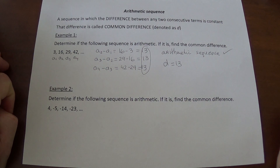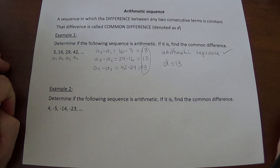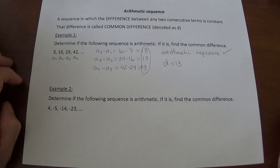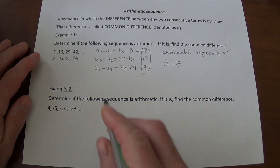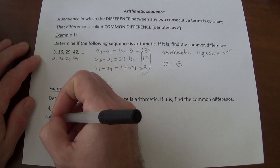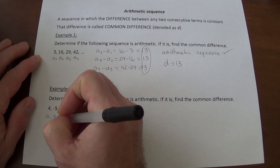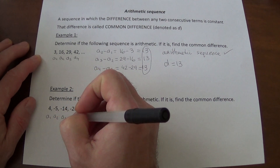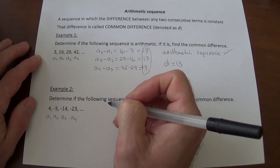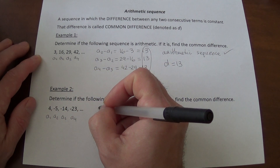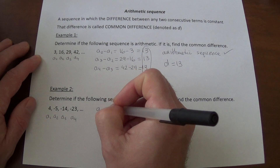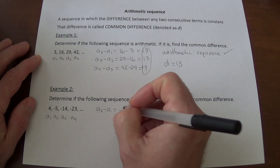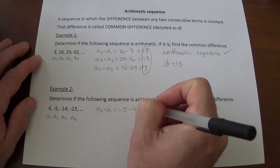Now we're going to take a look at the next problem — same exact question, except our sequence is different. Our terms are 4, negative 5, negative 14, negative 23. We follow the same process: this is the first term, second term, third term, fourth term. So a2 minus a1 is negative 5 minus 4, which is negative 9.